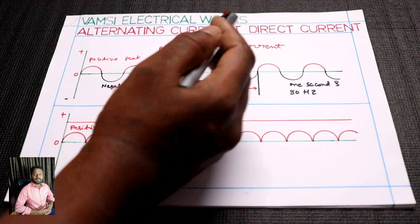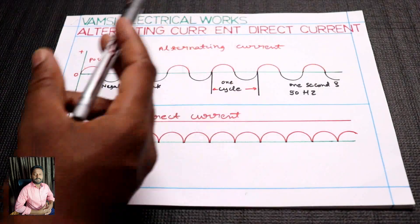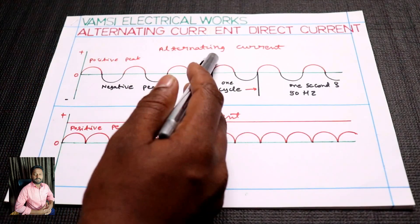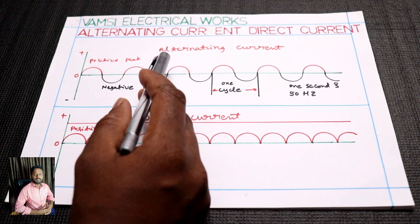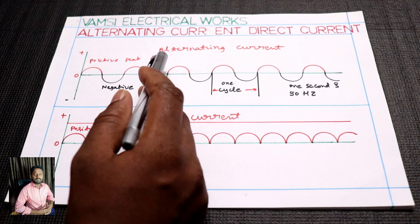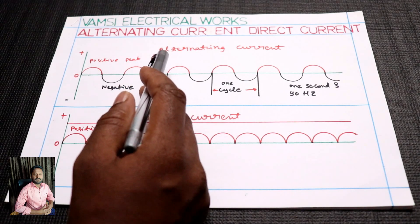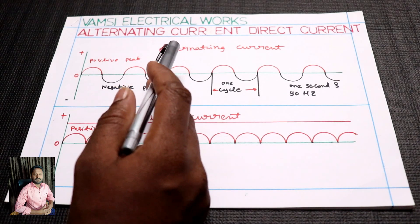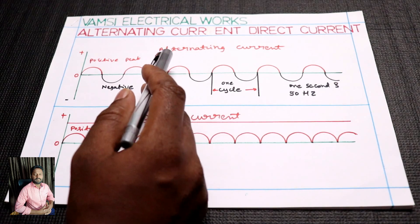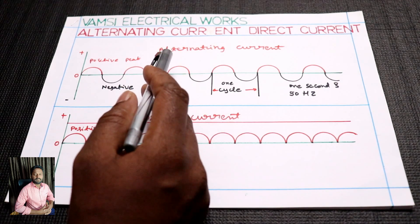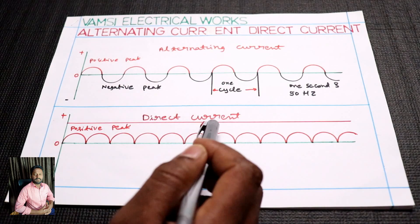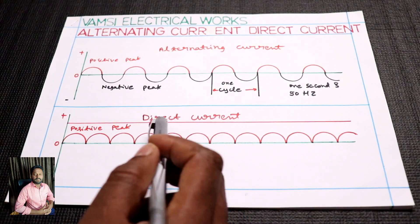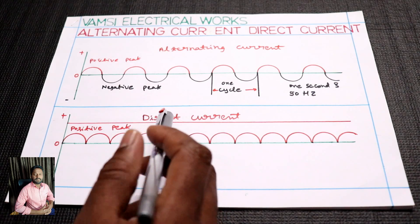The alternating current is different. The voltage and current are different. In a second, there are 50 cycles in the Indian standard for alternating current. There are 50 cycles in alternating current and 80 cycles in direct current.